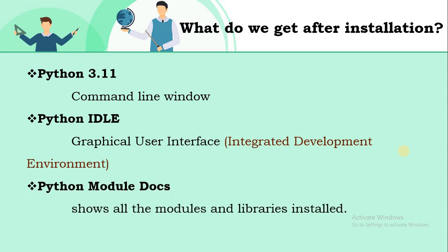After completion of the installation process, what do we get? Generally we get three software components. First is the Python command line window — with the help of this you can execute programs, but it is a single-line environment, meaning you can execute one line at a time. Second is Python IDLE, which is a graphical user interface with menus. Third is Python Module Docs, which shows what different modules and libraries are installed along with your Python software.